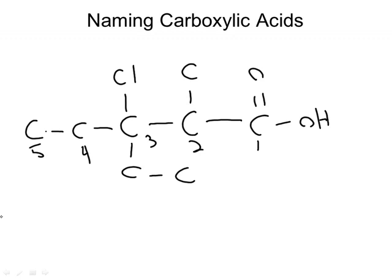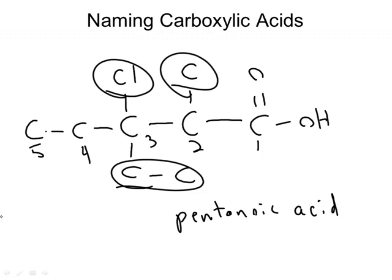The parent chain name is going to be pentanoic acid. All we have to do is identify the substituents. We have three substituents: an ethyl group there, a chloro group, and a methyl group. So in alphabetical order...